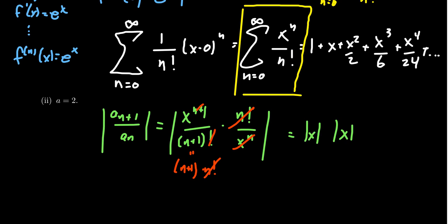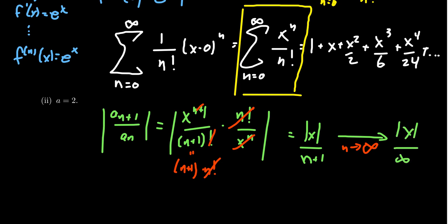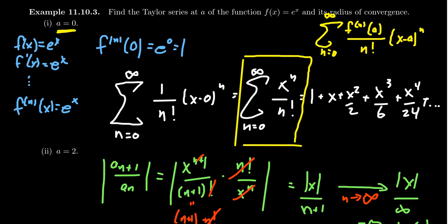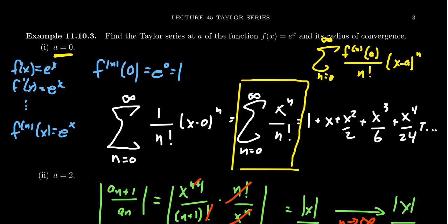So we end up with the absolute value of x over n plus one. Taking the limit as n goes to infinity, we get the absolute value of x over infinity. No matter what real number we place in for x, a real number divided by infinity is always zero. So this limit equals zero, which is less than one. By the ratio test, the series is absolutely convergent for all real numbers, and so the radius of convergence is infinity — the series converges from negative infinity to infinity.